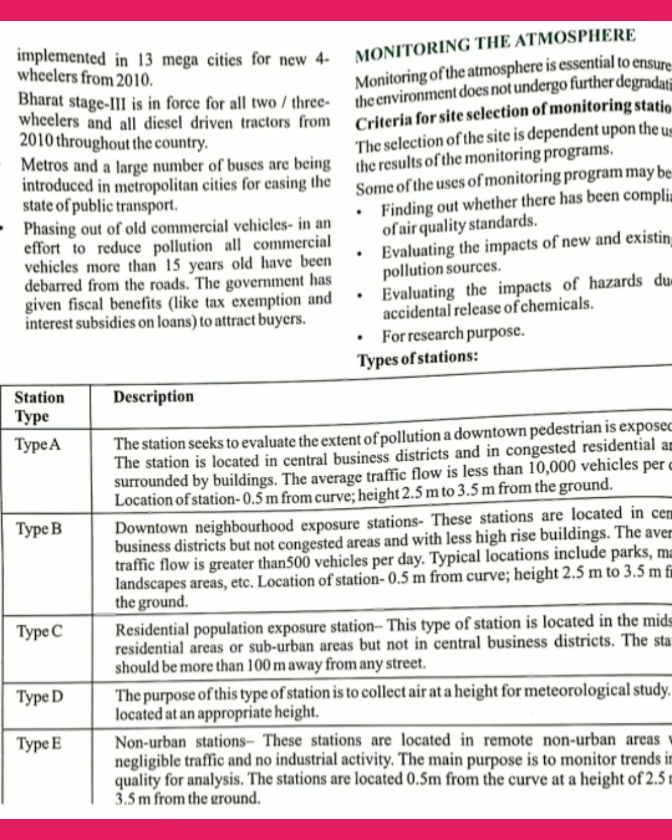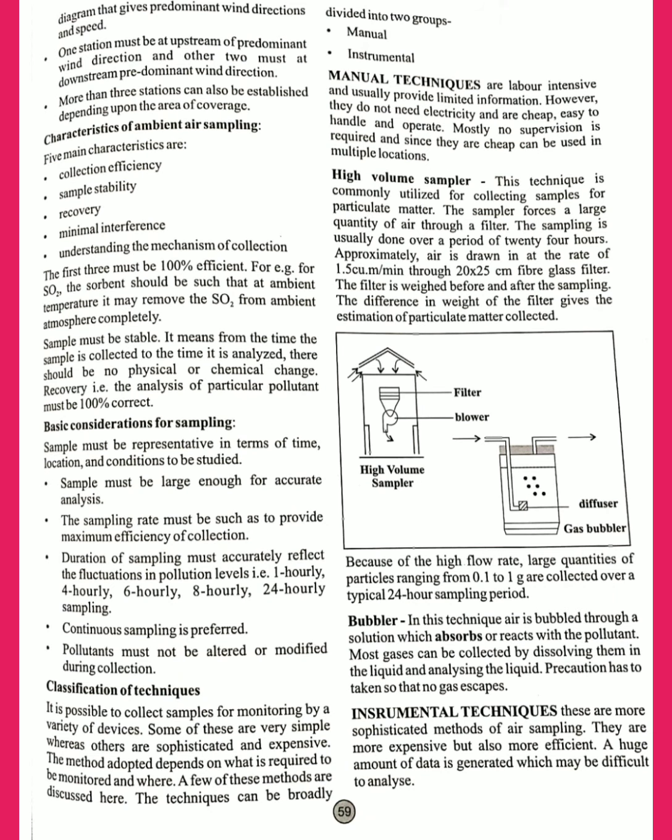There are different types of stations whose purpose is to monitor the atmosphere in different places. There are five main characteristics of ambient air sampling: collection efficiency, sample stability, recovery, minimal interference, and understanding the mechanism of collection. The first three need to be 100% efficient, the sample must be large enough for accurate analysis, and pollutants must not be altered or modified during collection.